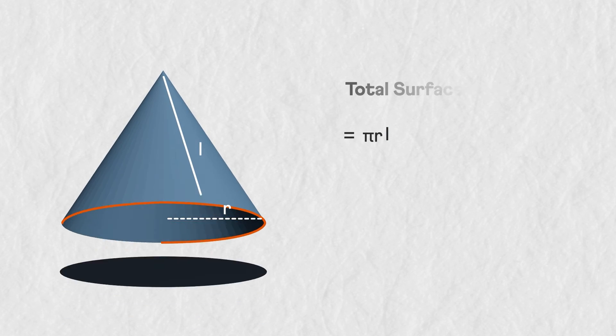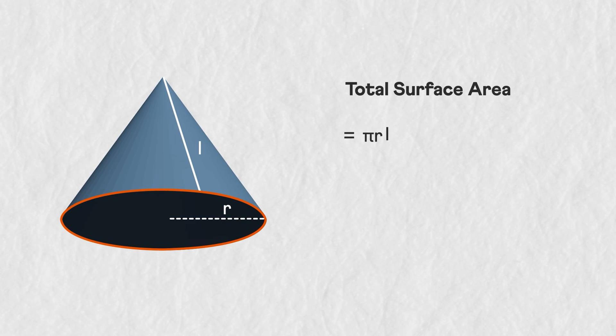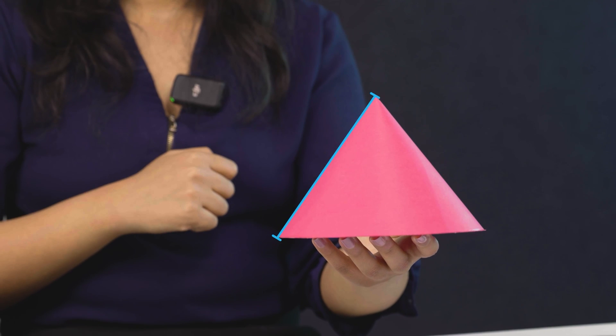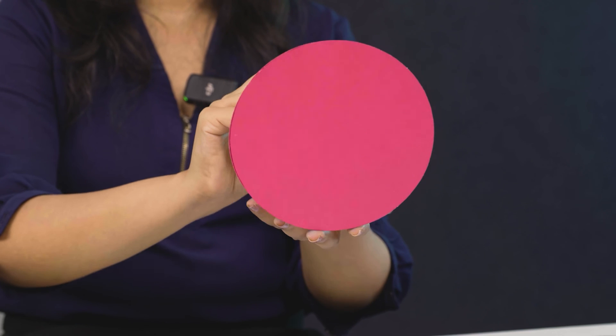And if we need to find its total surface area, we'll add the area of the base circle to this to get πrl plus πr². Now can you find the total surface area of this cone with slant height 5 units and the base radius as 3 units? Let us know in the comments.